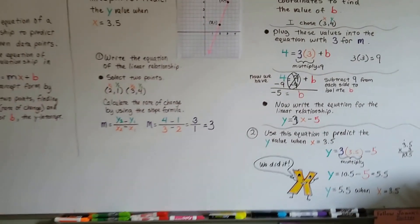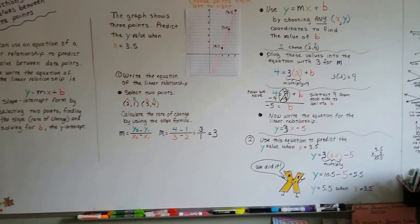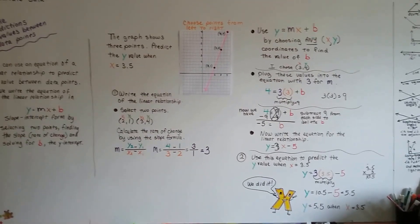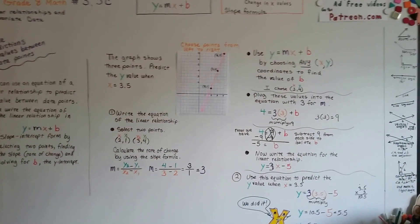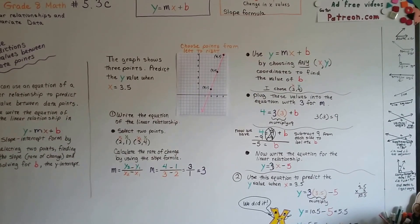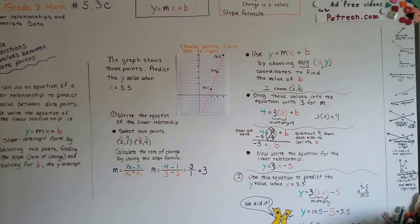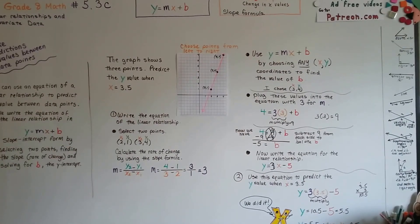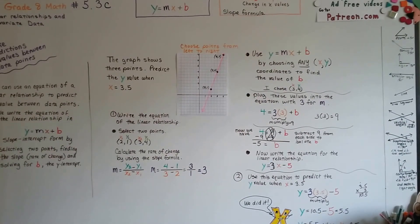So that's making predictions of values between data points. Now that you've learned what you've learned in 5.3a, b, and c, now we can go on to 5.3d and do the bivariate data. That's what we've been building up to in this unit. I'll see you there. Bye.